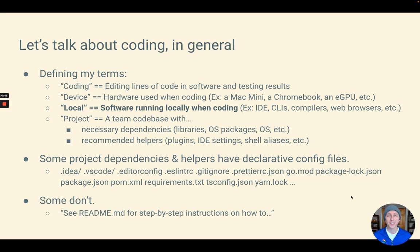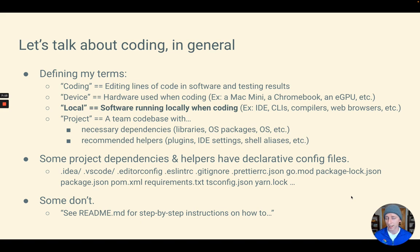I'm going to define the term 'project,' just so we're talking about the same things. When I say project, I mean a team codebase — not an individual project — and it has to have at least one repository of code associated with it. Any project like that is going to have necessary dependencies, things that have to be installed for the code to run, and then recommended helpers, things that are probably a good idea to use to improve your dev productivity.